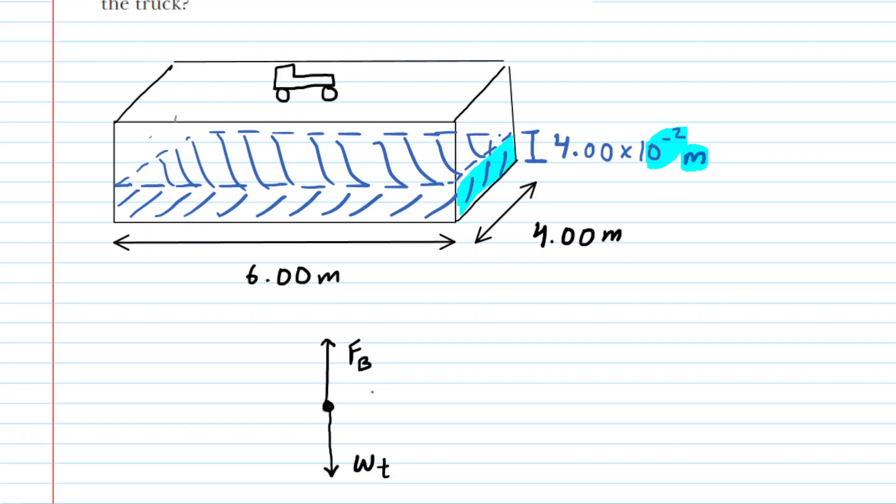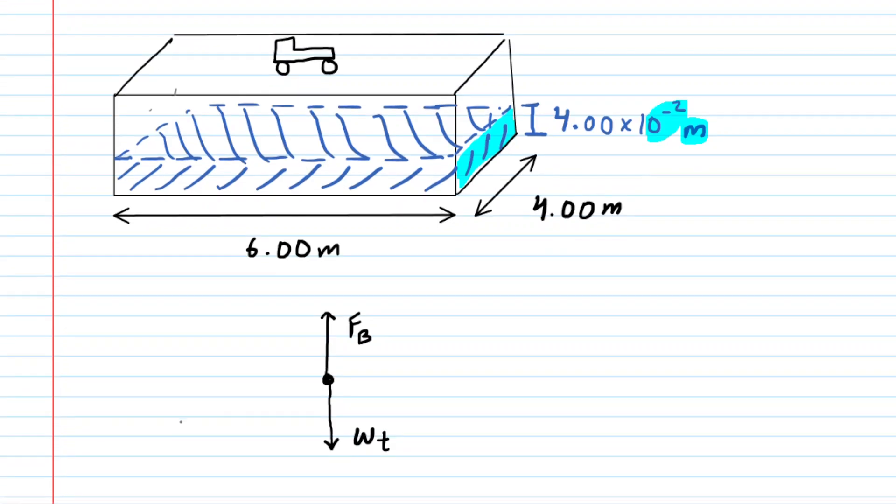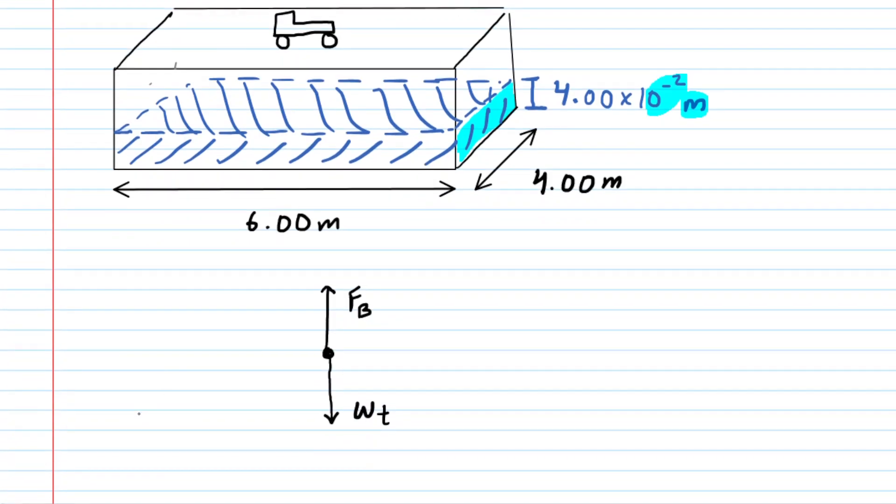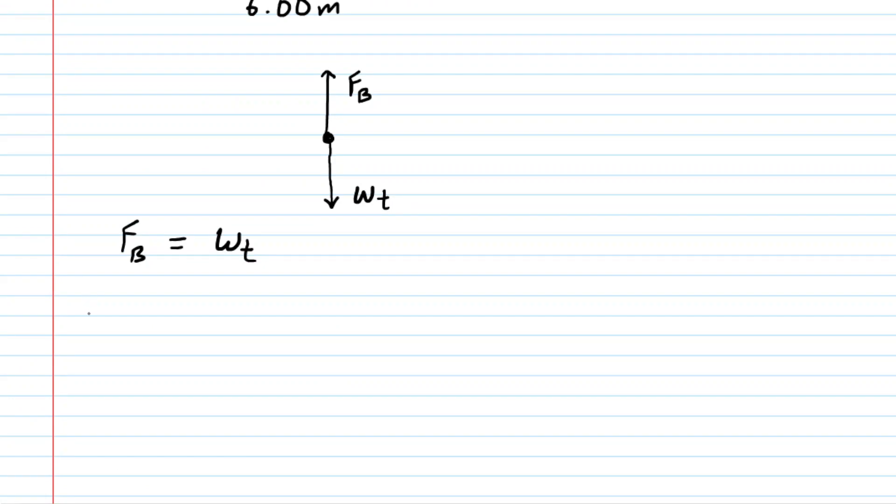Now, the ferry boat is in equilibrium, so this means that the upward magnitude of the buoyant force has to be equal to the downward magnitude of the weight of the truck. So we're going to set those equal to each other, and then we're going to talk about a very useful expression for the buoyant force.